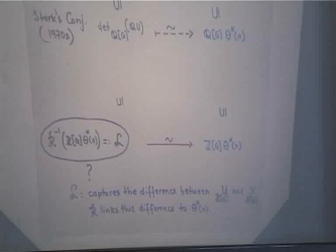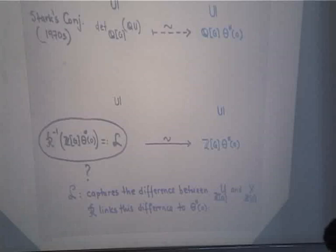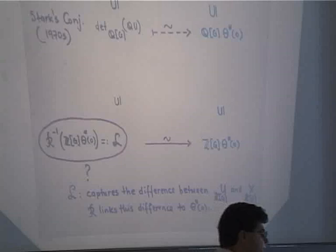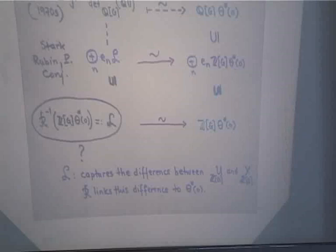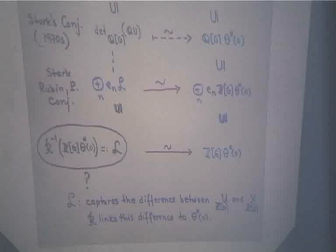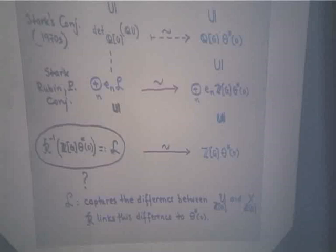Let me show you some attempts that people over the years have made to understand this lattice L. Among them I should mention Stark, who started looking at this integral version of the problem in 1980; then Rubin continued; then I did some work in the late 1990s. What we decided is that studying the lattice L in full is hopeless, so why not break it up into N-eigenspaces with respect to N equaling the order of vanishing of the various L-functions.